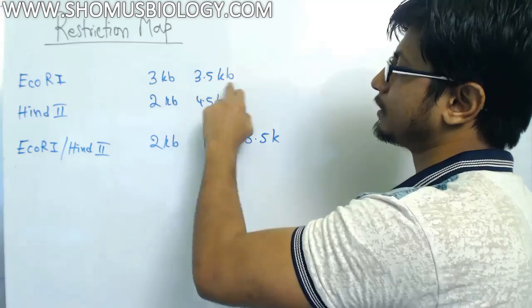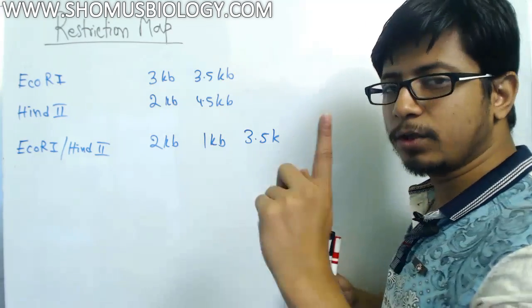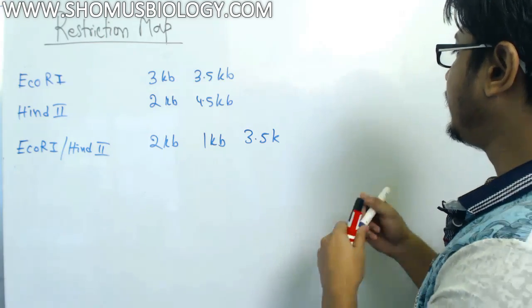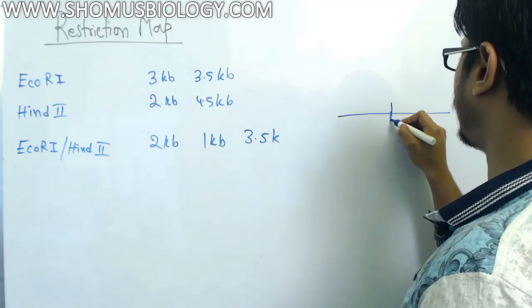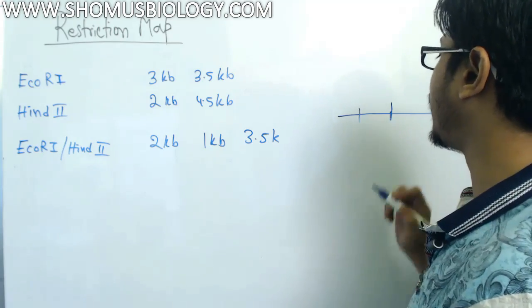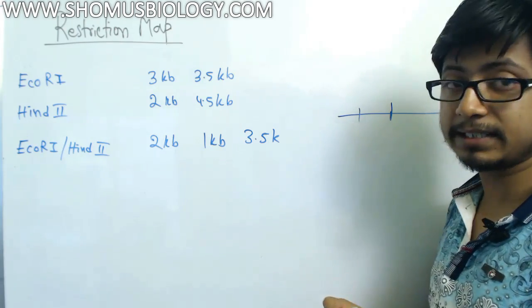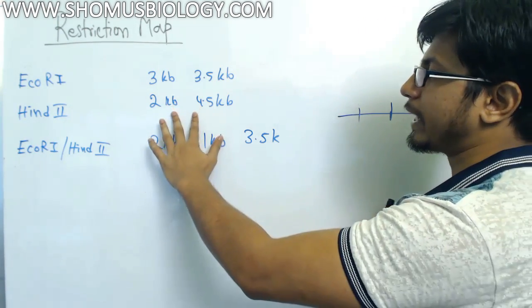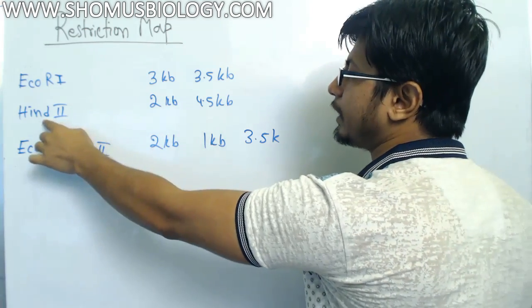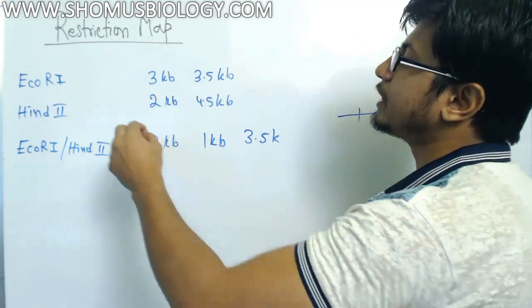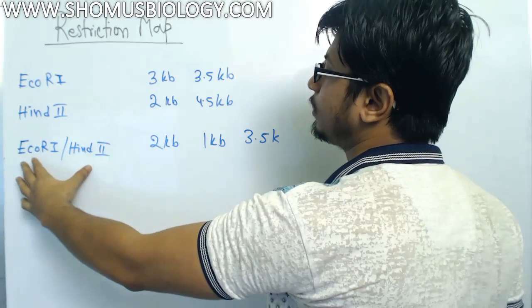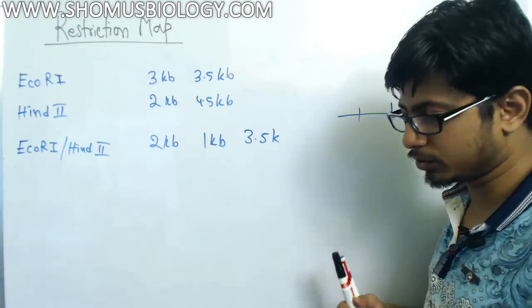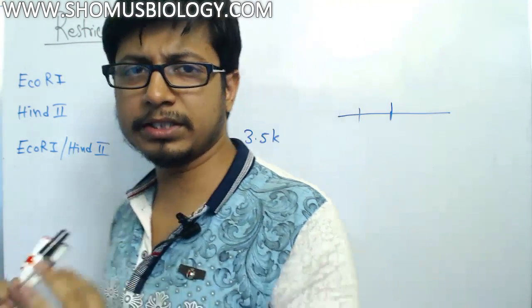EcoR1 gives 13 kb and 13.5 kb. That means EcoR1 cleaves the DNA once, because for a linear DNA if you cleave it once, two fragments are produced; if you cleave it twice, three fragments will be produced. The same thing applies to HindII — it also produces two fragments, so the cleavage site for HindII is also one. Now if you treat the DNA with both EcoR1 and HindII, three fragments are generated.